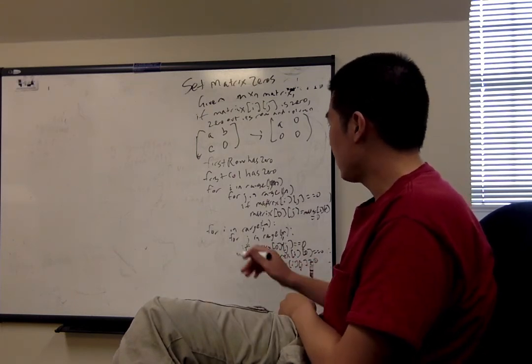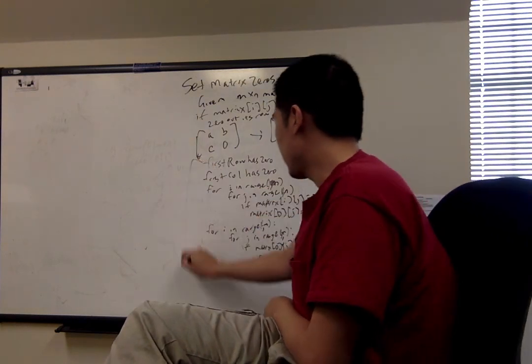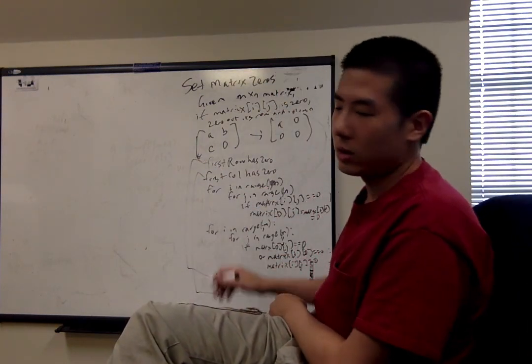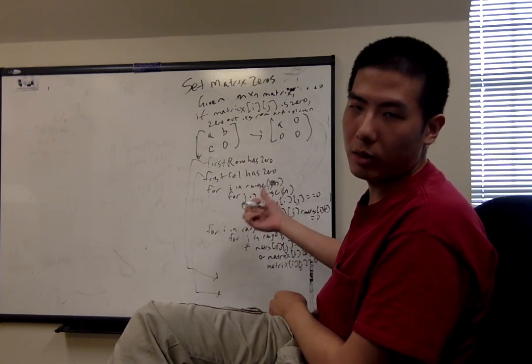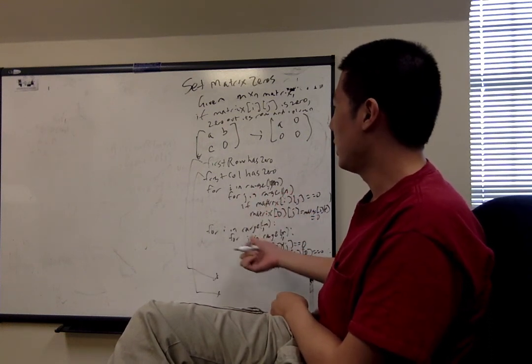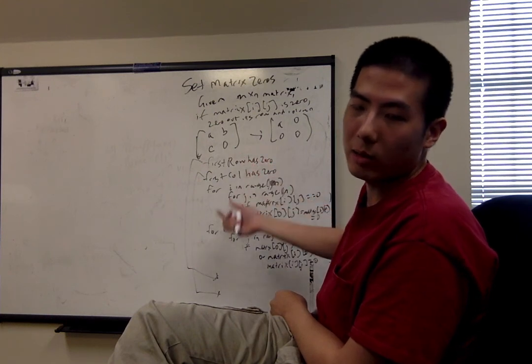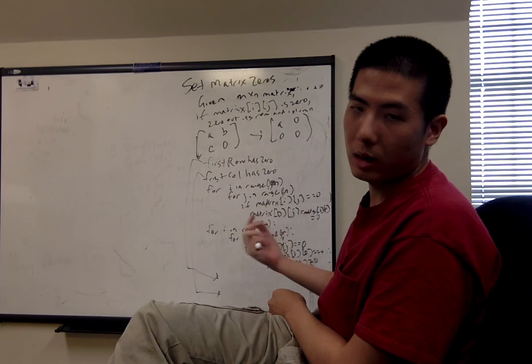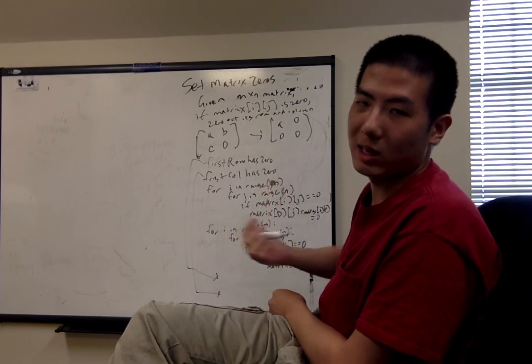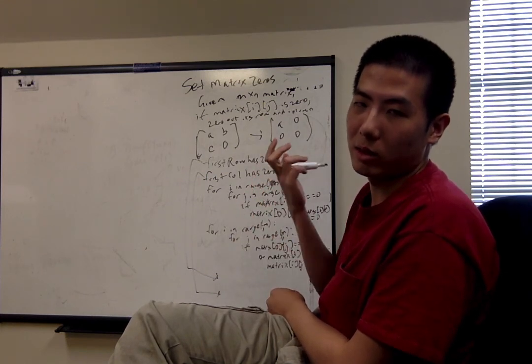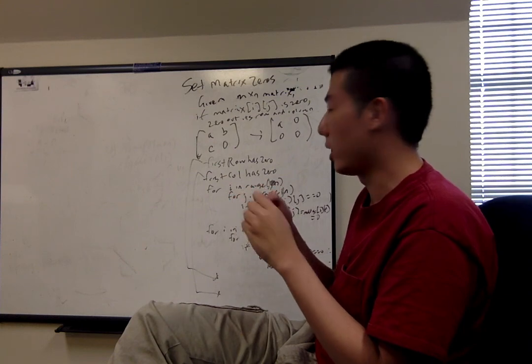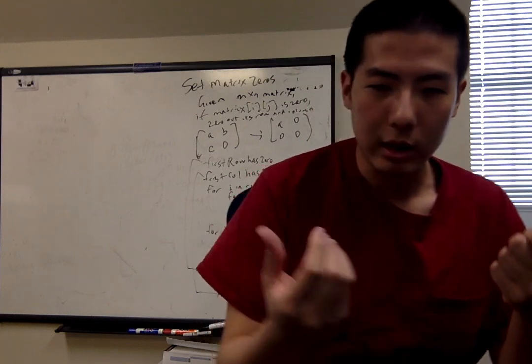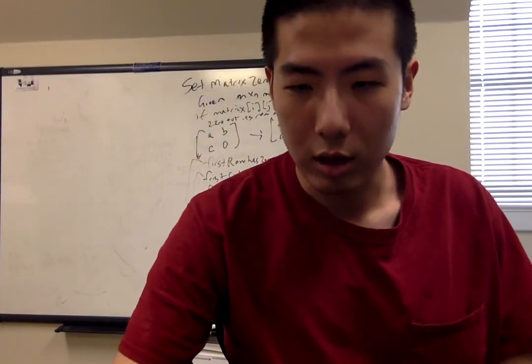And then the last thing we need to do is to take the computed Boolean values that we created in the beginning and then appropriately update the first row and first column such that if the first row had a zero in it at the beginning before we started to use it for logic purposes, then we want to zero out that row in its entirety and similarly with the first column we want to apply the same logic. And this is the way to do Set Matrix Zeros, a popular LeetCode problem, in the most efficient way possible.